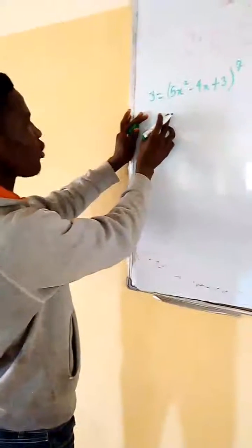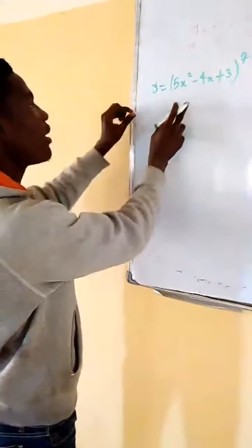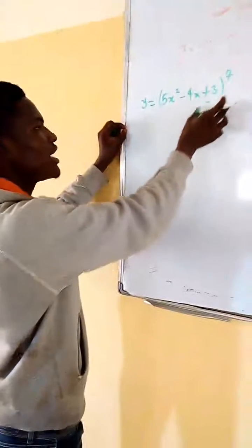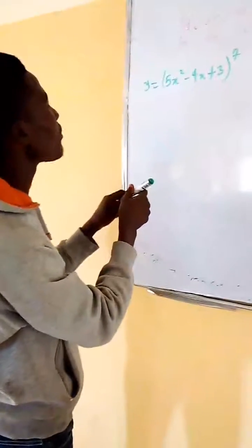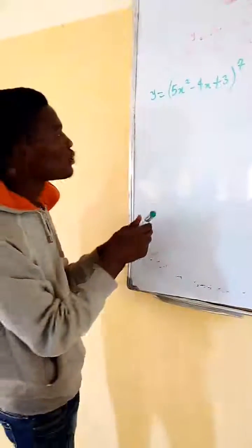Now, I have a question: y = (5x² - 4x + 3)^7. You might look at this question and say, oh, this is too much for me to simplify or differentiate, but it is very simple.